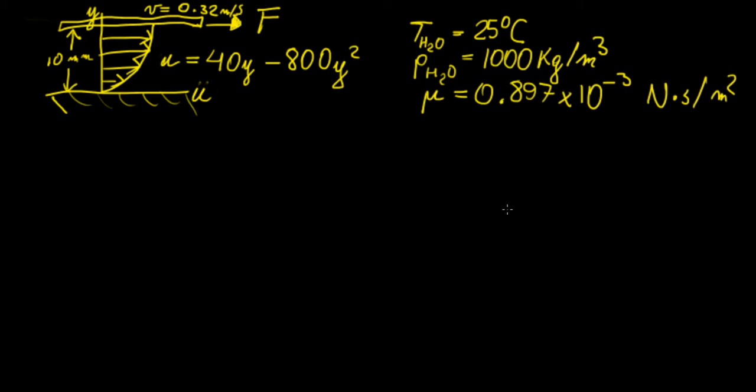Having identified all those, what we're going to do first is calculate the velocity gradient du over dy. In this case we're given that u is this function of y, so basically all we're going to do is differentiate this, so this is going to become 40 minus 1600 times y.